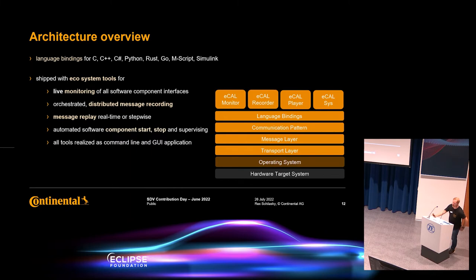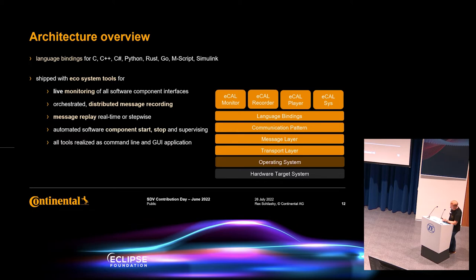eCal ships with so-called ecosystem tools. The most powerful one for first inspection in the car is the live monitoring tool, the eCal Monitor. It can show all connections, frequencies, data sizes, data types, and more. The next one is the distributed message recording — the eCal Recorder. This is a specific application allowing you to record all data flows without interfering with the network of the car. On every single host there is a running eCal recording service, orchestrated by a central application and synchronized so that recorded data goes directly to local mass storage rather than over the network.